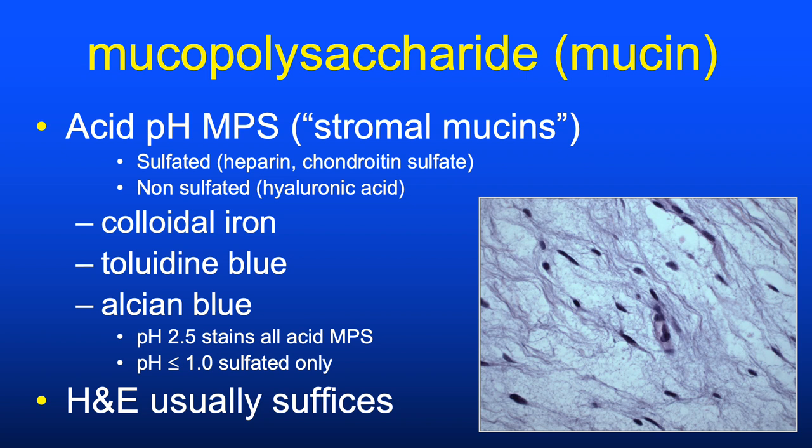Interstitial mucin has a distinctive appearance: pale blue, gray, lavender—a delicate cobweb-like appearance, often the same color as elastotic fibers but with a different pattern, and often extending into the deep dermis.